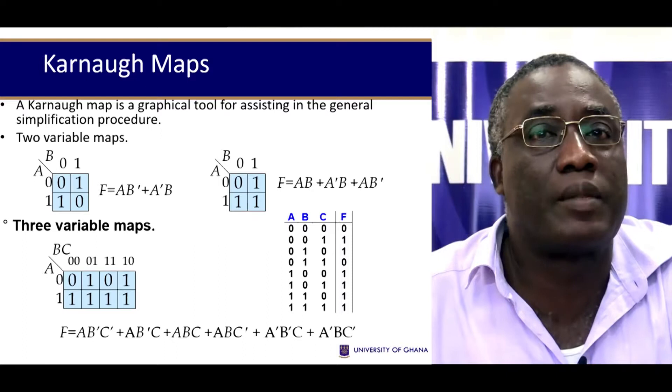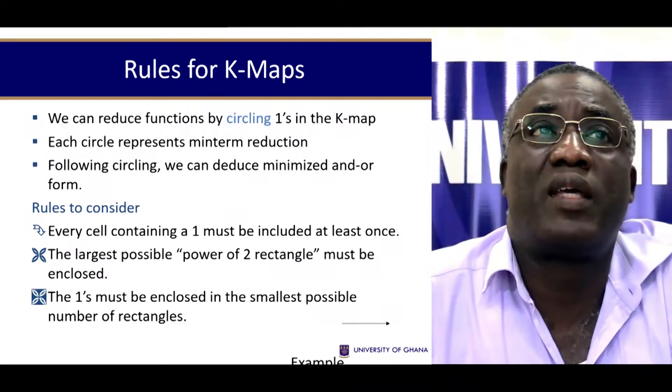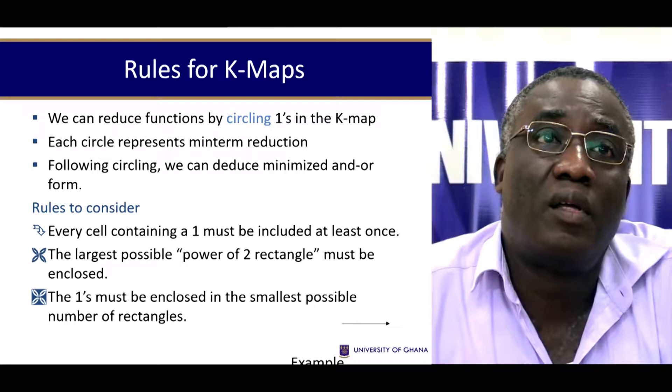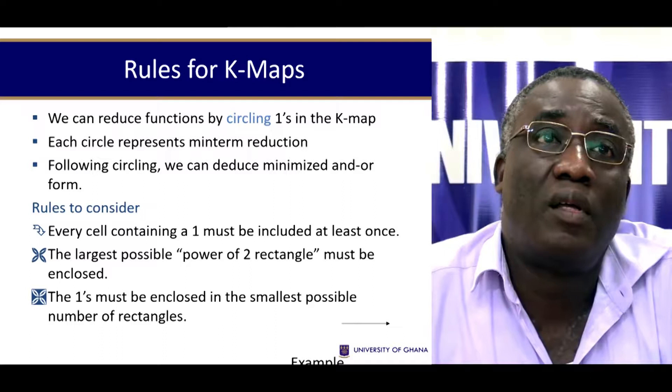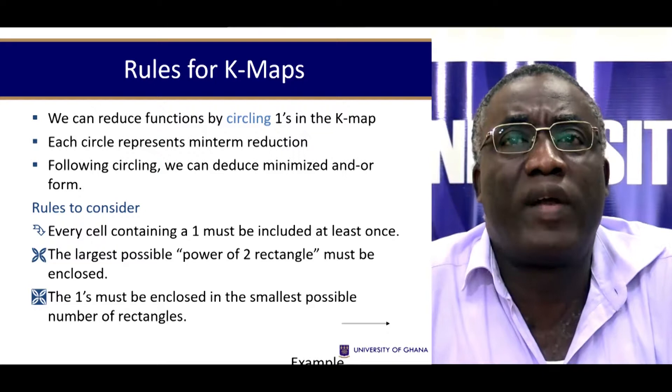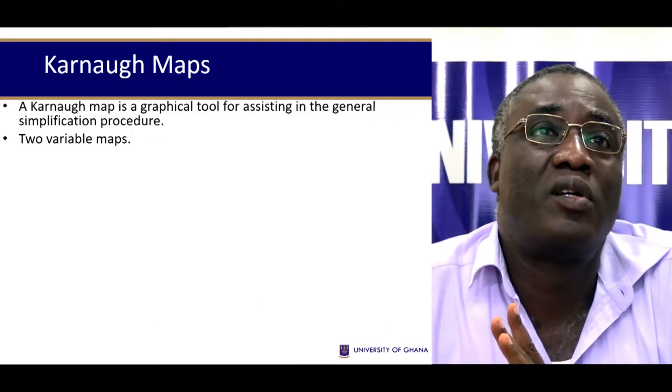So how do you go about using K-maps for reducing the expressions? The way we go about this is to first of all circle all the ones on the K-map. Each circle represents a mean-term reduction. Now once we've done the circling, we can then deduce minimized AND-OR forms. The thing is to include every cell containing a one at least once. Those are the rules.